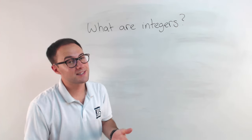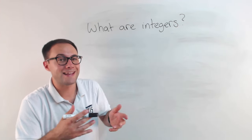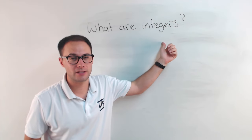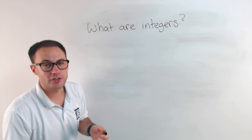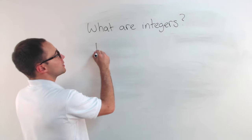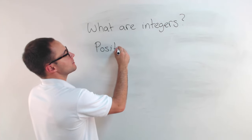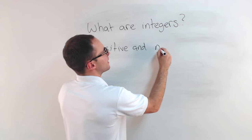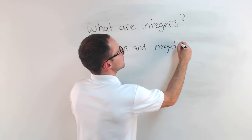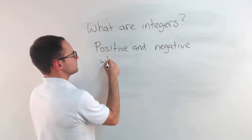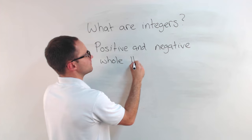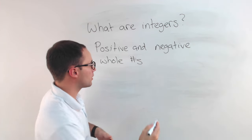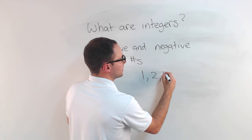Car B had the greater speed. So today's lesson is about absolute value and integers. First, let's talk about what integers are. Integers are just positive and negative whole numbers — 1, 2, 3, 4, those are integers, and so on.